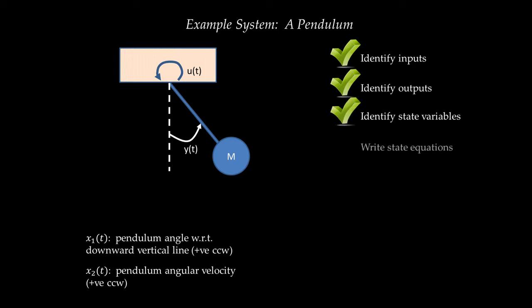Step four is to write down the state equations — specifically equations for X1 dot and X2 dot. The equation for X1 dot is easy: the rate of change of pendulum angle with respect to time is just angular velocity, so X1 dot equals X2. For X2 dot, the rate of change of angular velocity is angular acceleration. To write a state equation for angular acceleration, I need the summation of moments acting on the pendulum using the rotational law of motion: the summation of moments equals angular acceleration multiplied by the moment of inertia.